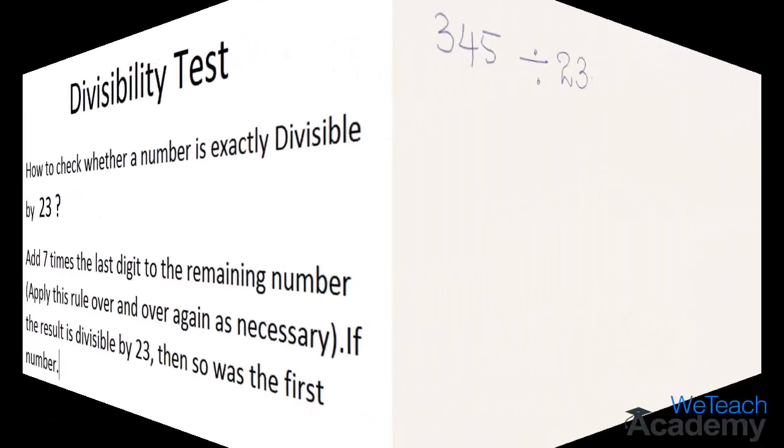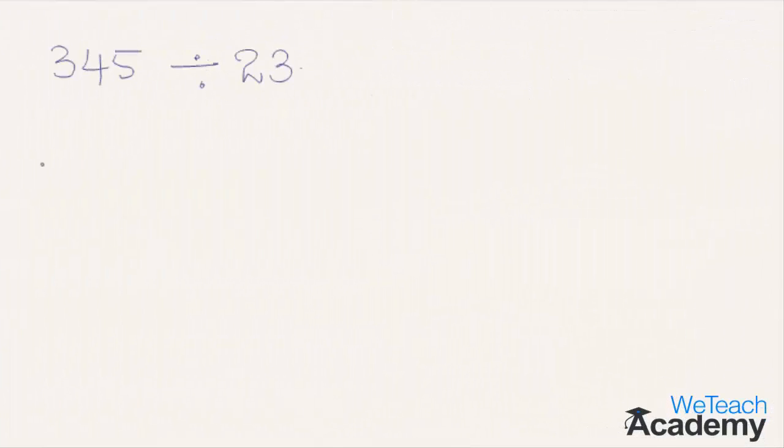Now let us check this concept using an example. So here 345 divided by 23. According to the concept, adding 7 times the last digit to the remaining number, we can write this as 34 plus 7 into 5, that is equal to 34 plus 35.